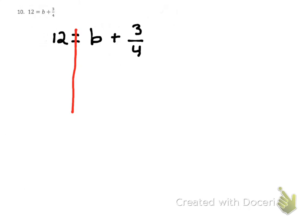I'm going to start off by trying to get B by itself by subtracting 3 fourths. If I have a positive 3 fourths and I subtract 3 fourths, I'm left with 0. If we subtract 3 fourths from one side, we have to subtract 3 fourths from the other side. And this is where we run into some problems.